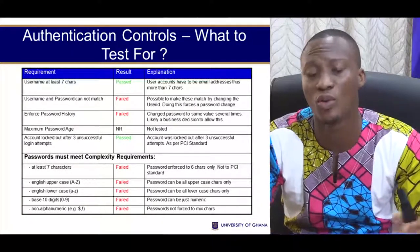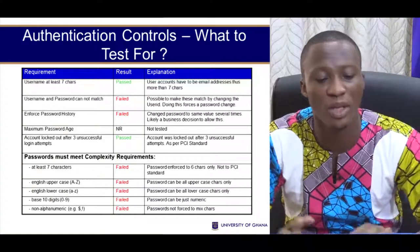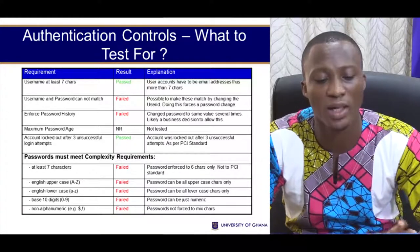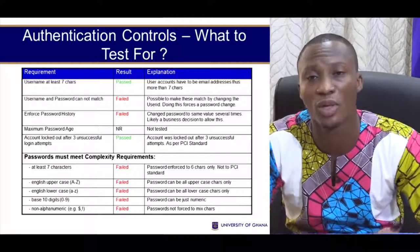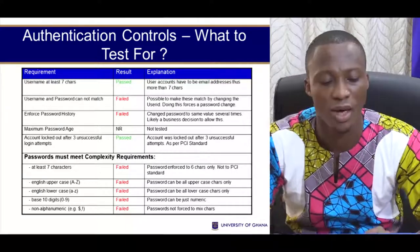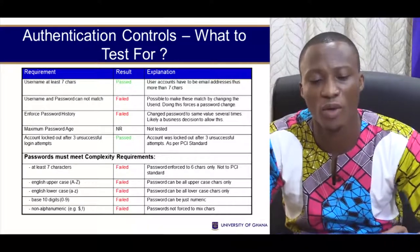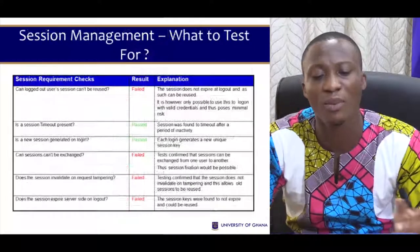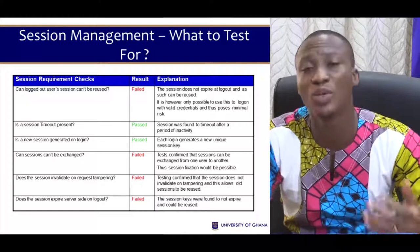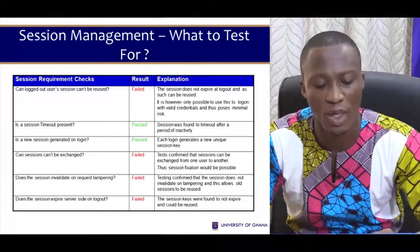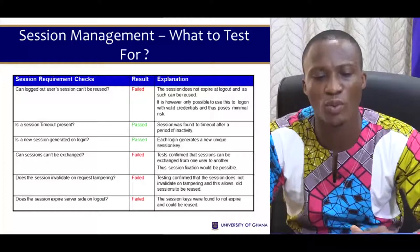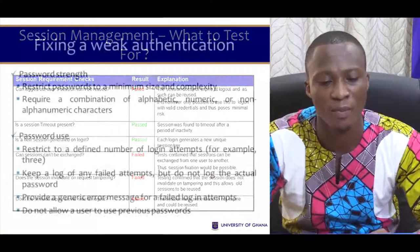For authentication controls, things to test for include: usernames should be at least seven characters; username and password must match — if there is a mismatch it should fail; password history should be enforced; and maximum password age should be set. For session management, check whether session timeout is present, always create a new session and generate new IDs, and verify whether the session invalidates on logout or request termination.